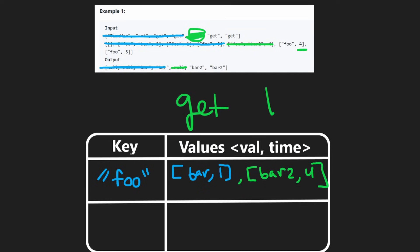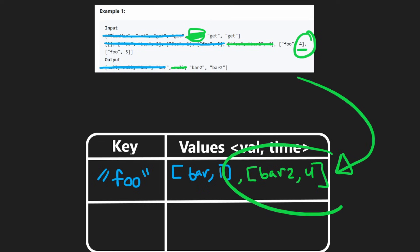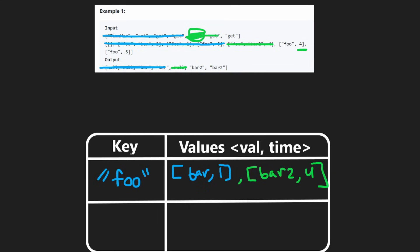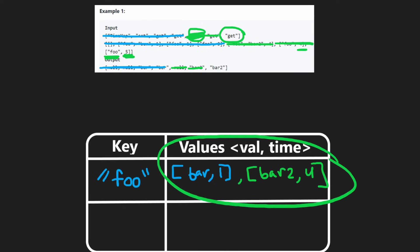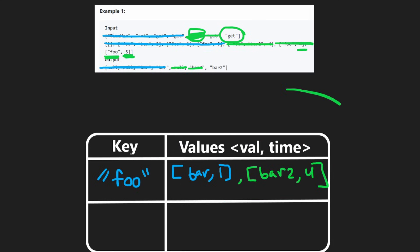Since we're looking for timestamp four, we know it exists, so we return bar two — and that's exactly what they returned in the output. Now for the last operation, another get with key foo and timestamp five. We run binary search looking for an exact match of five. If we can't find five, what's the closest value less than five? It's four. So the value of that is bar two, and we'd return bar two again. That's what I wanted to cover with this problem. With a single key this is clear, and it wouldn't be much different with multiple keys. So let's get into the code and implement this binary search solution.